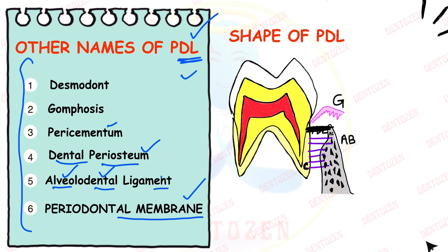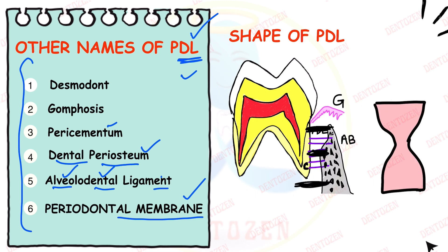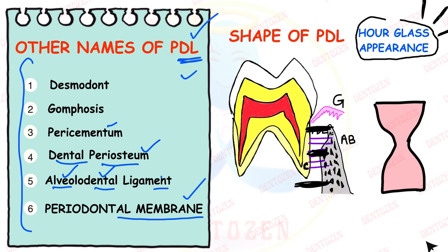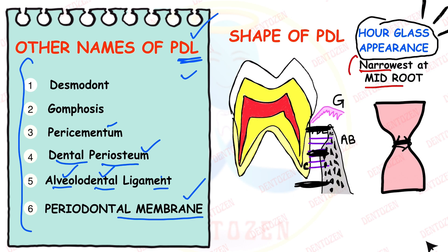The shape of PDL is wide at the top, narrowing in the middle, and wide again at the bottom — resembling an hourglass appearance. This is an important viva and short-answer question. It is thinnest at the mid-root region — another important viva or short-answer question.